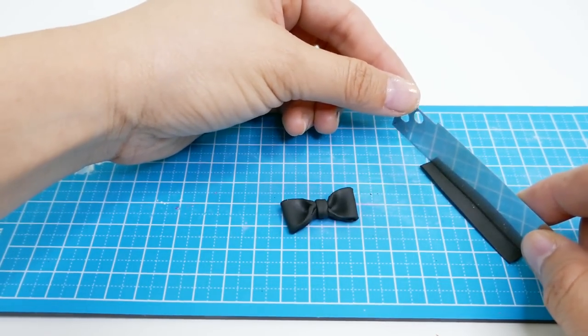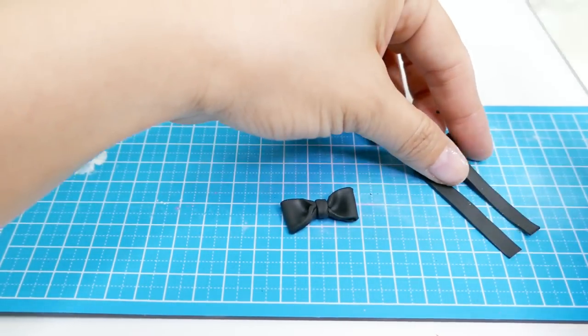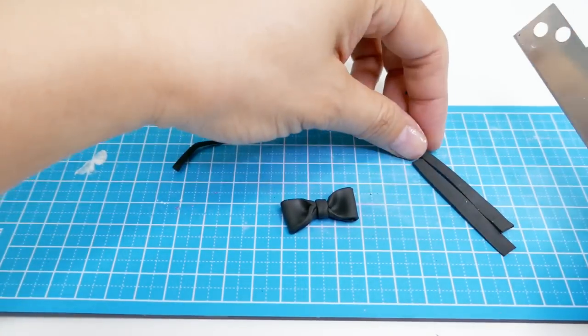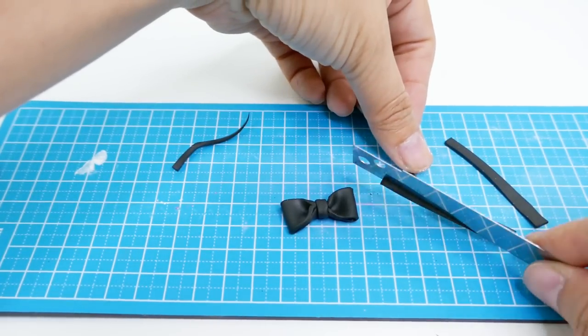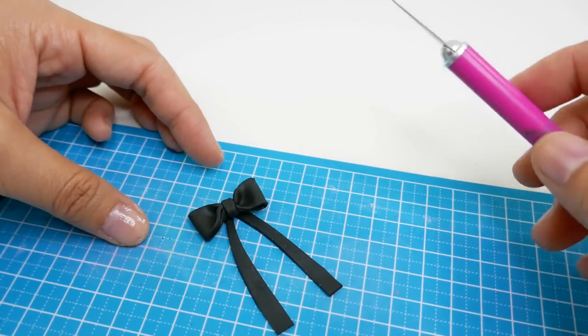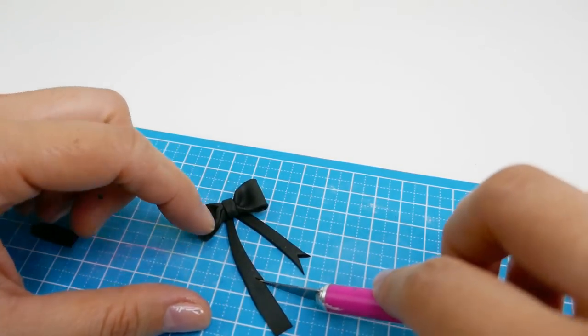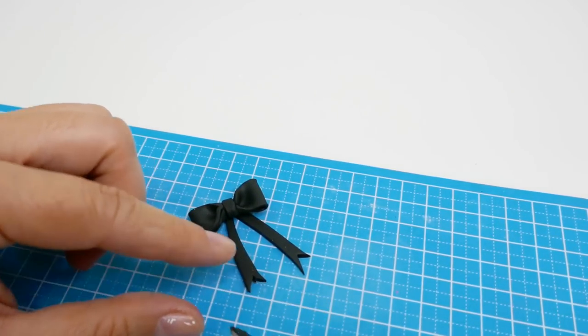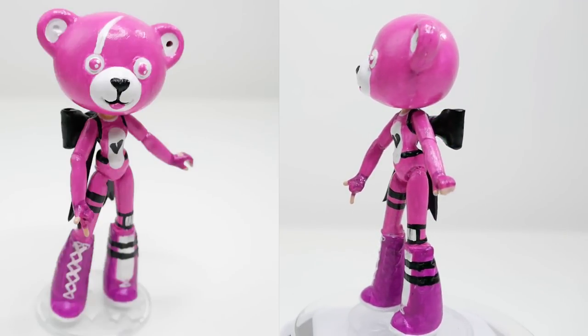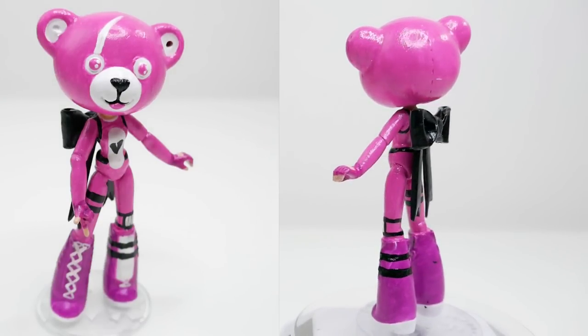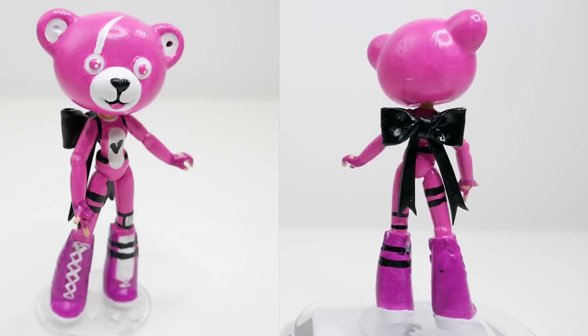And finally, we're going to cut out two ribbons to put underneath it. Alright everyone, so we are done. Take a look at my Cuddle Team Leader. Isn't she adorable?